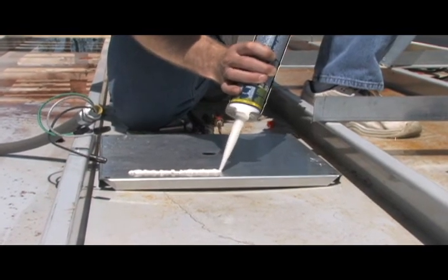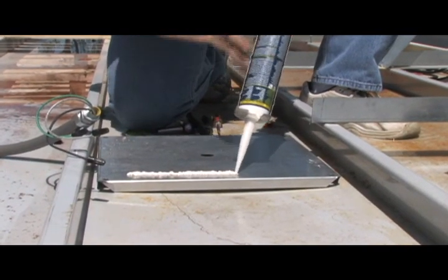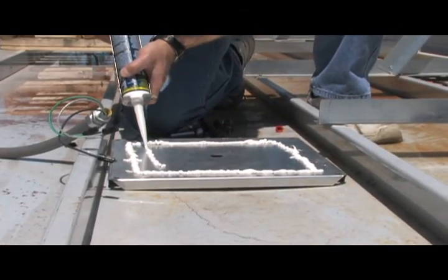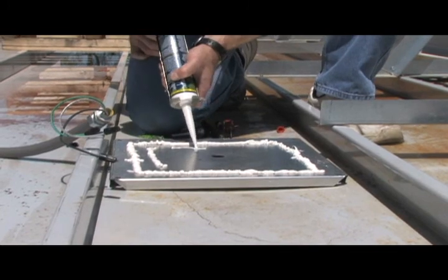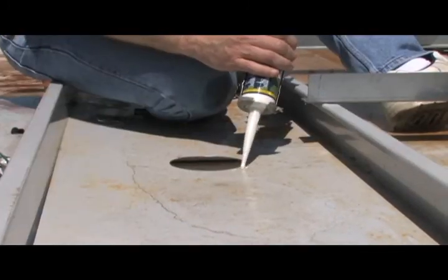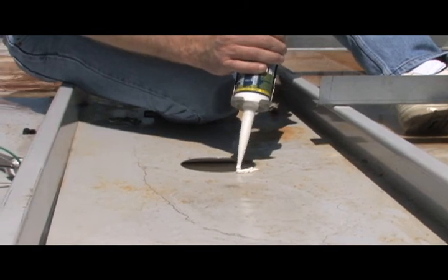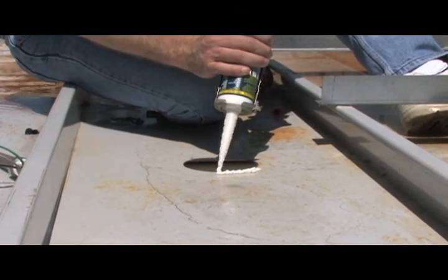You will need to put two beads of the supplied adhesive sealant on this mounting plate outside the bolt pattern that fits in the four inch hole. After that, we will also need to apply a bead of the sealant around the four inch hole on the top side of the canopy deck.